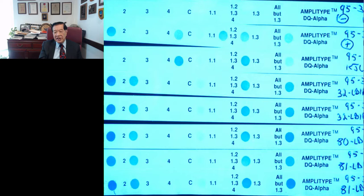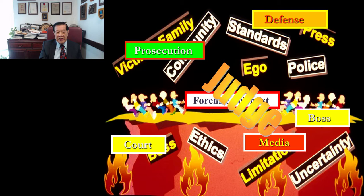With the pressure from prosecution, defense, court, judge, ethical standards, media, family, and police, forensic scientists are constantly under pressure. That is why we need high integrity, ethical standards, scientific standards, and procedural standards.